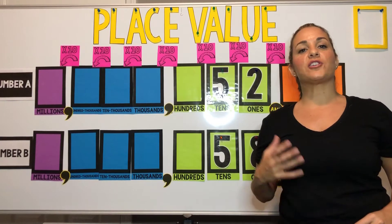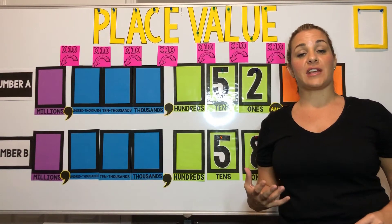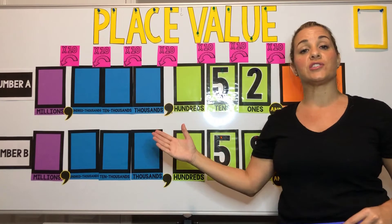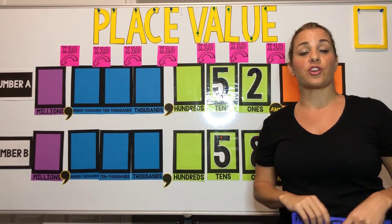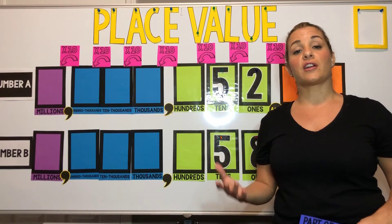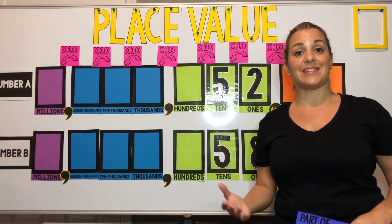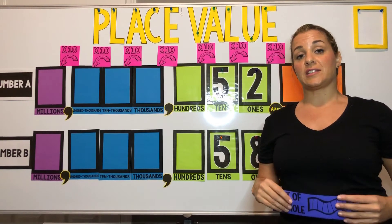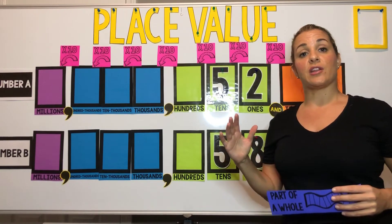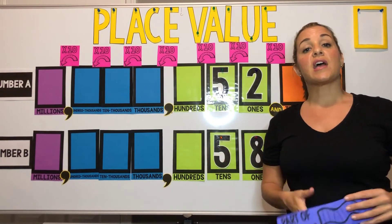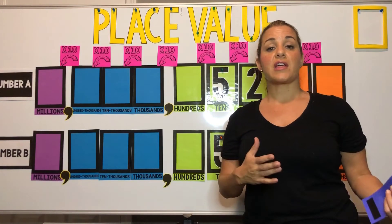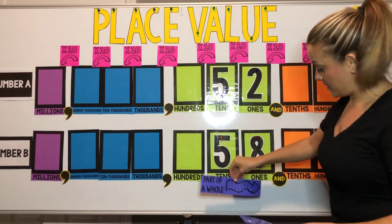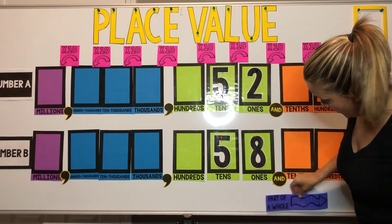By fourth grade, your students will have a better understanding of place value and you can continue to add more digits to your place value chart. You're also going to start introducing decimals, so it's very important for the kids to understand the difference between the whole numbers and the parts of a whole, and where they divide — and that's at the decimal point. So we're going to separate the whole numbers from the parts of a whole.